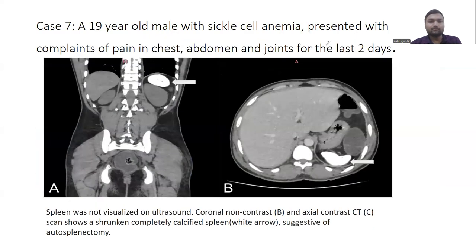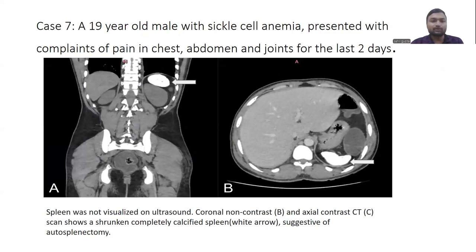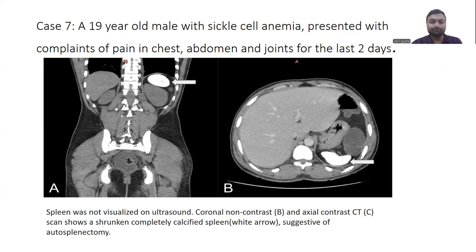Case 7: a 19-year-old male with non-canal sickle cell anemia presented with pain in the chest, abdomen, and joints for the last two days. On ultrasound, the spleen was not visualized. CT showed a shrunken, completely calcified spleen, and we suggested autosplenectomy.